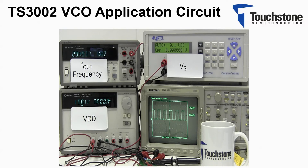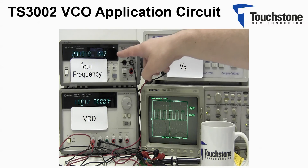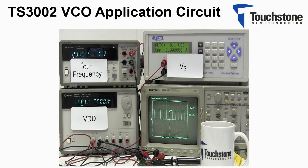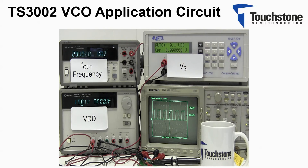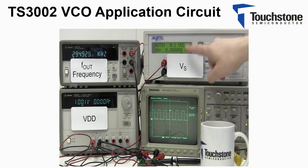Here we have the TS3002 VCO circuit set up and ready for measurement. The circuit has been constructed on a board and is located here. There is a multimeter which will measure the output frequency from the Fout pin, while also an oscilloscope which will display the waveform from the Fout pin. First, I will begin with the VS voltage equal to zero volts, as shown here.